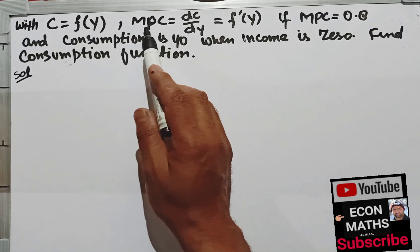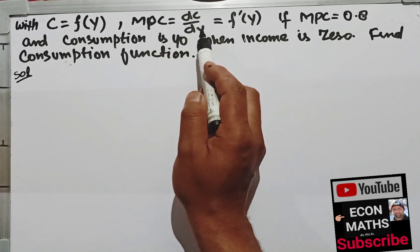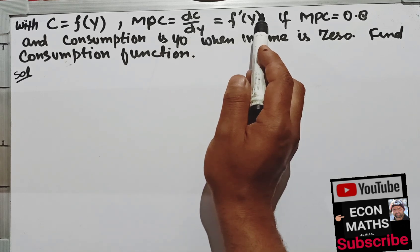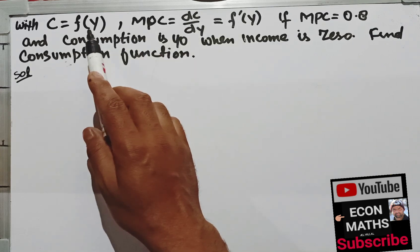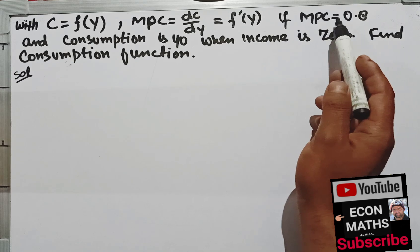that is dC divided by dy, is equal to f dash y, that is the derivative of this consumption function. If MPC is 0.8...